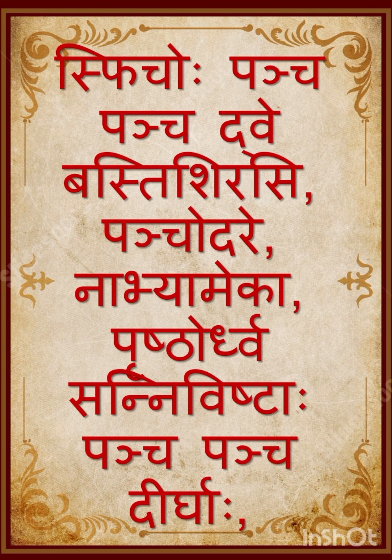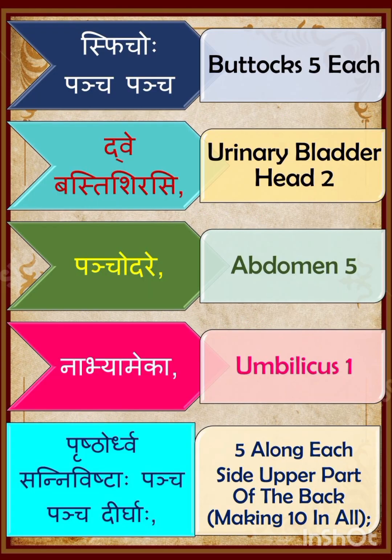Basti Shirasi — Urinary Bladder head has 2. Panchodare — Abdomen 5. Nabhya Mekha — Umbilicus 1. Prishto Urdhva Sanyi Vishtaha Pancho Pancho Dheergaaha — 5 along each side of the upper part of the back, making 10 in all.